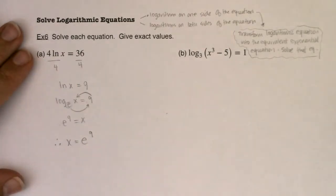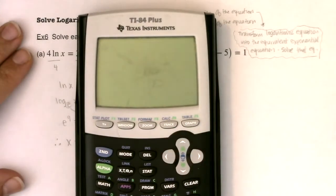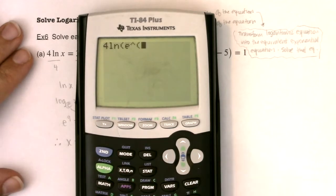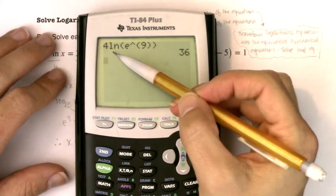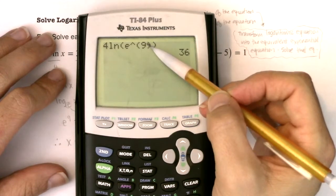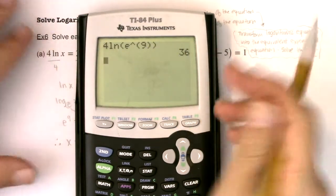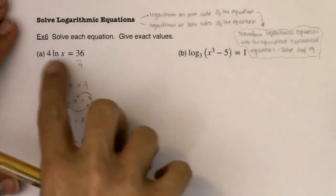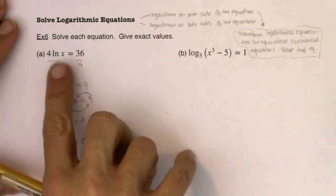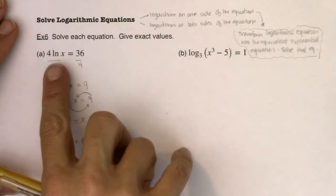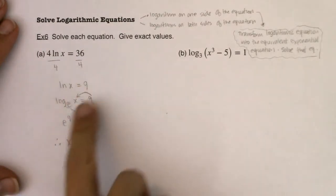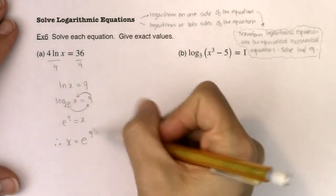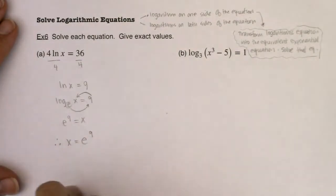We can verify: 4 times ln of e to the 9th equals 36. That's because the ln and the e cancel out, and the only thing that survives is the exponent, so 4 times 9 equals 36. The mechanics: isolate the logarithmic expression if it's not already isolated, then transform it into its equivalent exponential equation and solve.